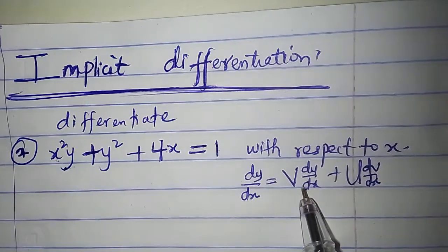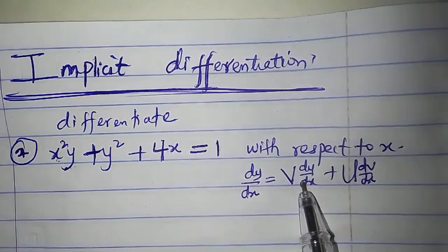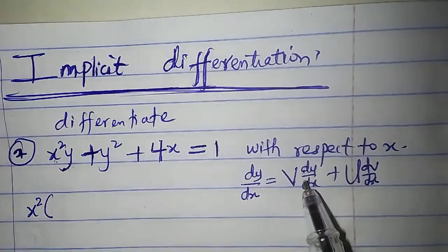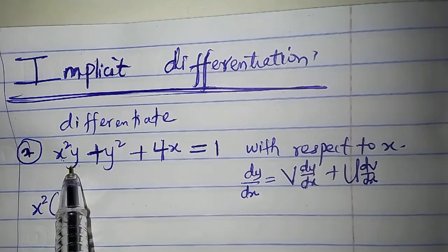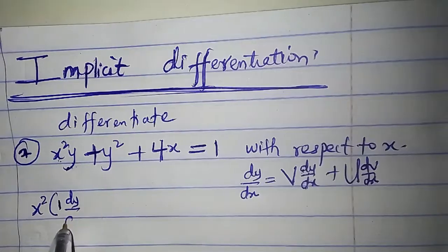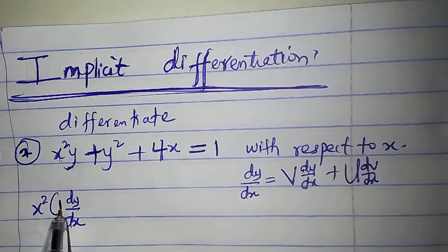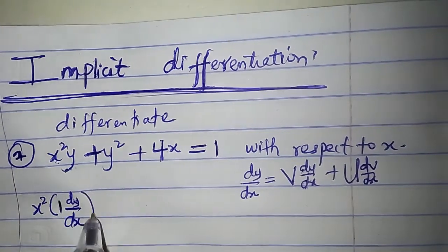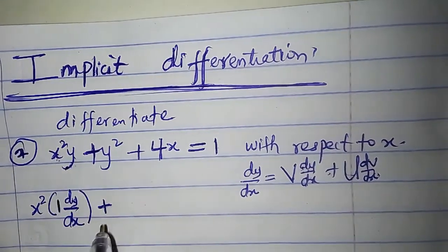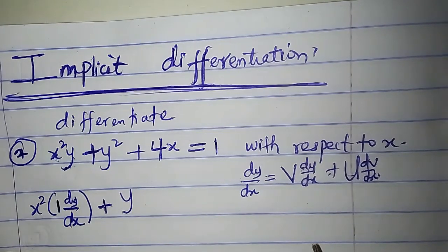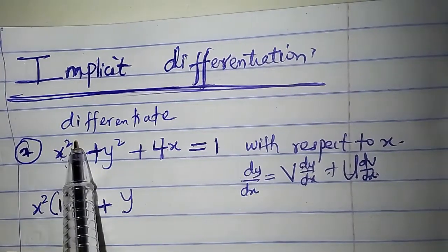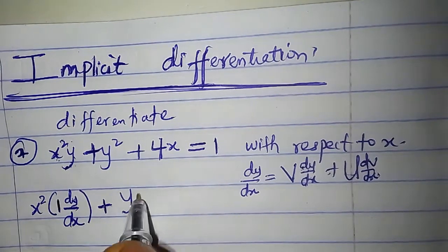Let us take x squared as v. Going by the product rule, v times du/dx: so v is x squared, and since we're taking y as u, du/dx means differentiate y, which gives 1, multiplied by dy/dx. Plus u is y, then write y times dv/dx — differentiate x squared to get 2x. So we have y times 2x.